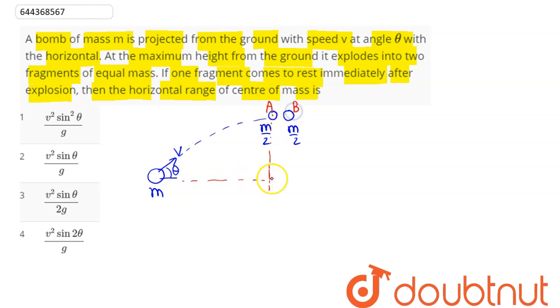This particle A will land at this position which is at horizontal distance of r by 2, whereas this particle B will gain the horizontal velocity at the highest position and will continue its path.